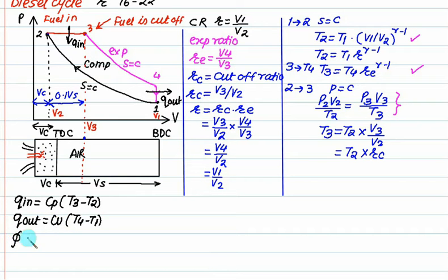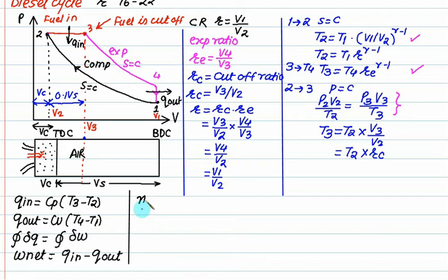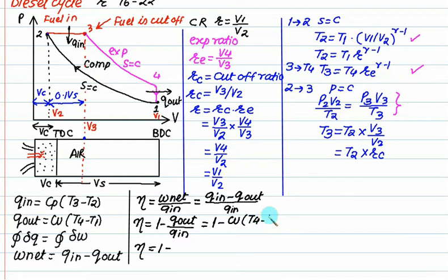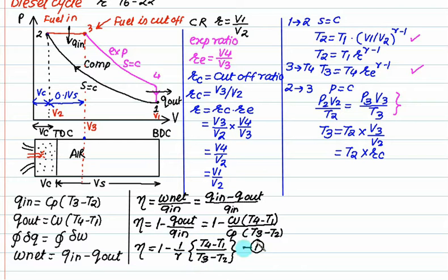Since the cyclic integral of δq equals the cyclic integral of δw, w_net equals q_in minus q_out. The efficiency of the Diesel cycle is w_net/q_in, which equals (q_in − q_out)/q_in = 1 − q_out/q_in. Substituting, this becomes 1 − (1/γ) · (t4 − t1)/(t3 − t2).